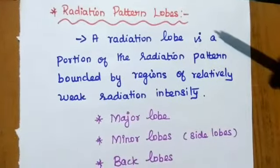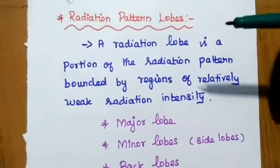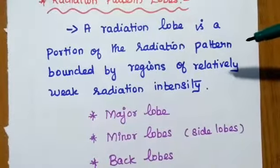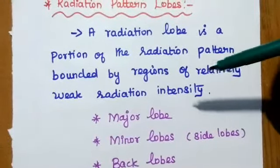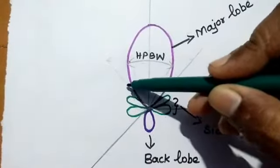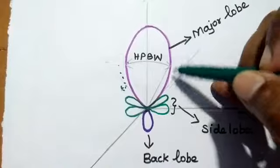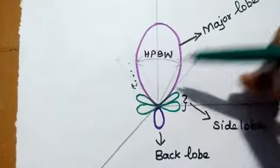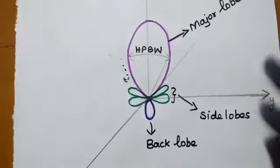Next is radiation pattern lobes. A radiation lobe is a portion of the radiation pattern bounded by regions of relatively weak radiation intensity. Beyond that boundary there is no radiation — there is null. So this is the maximum bounding area. The portion of the radiation pattern bounded by region of relatively weak radiation intensity is called a lobe. Lobes are classified into three categories: major lobe, which is also called main beam, minor lobes, and back lobes.